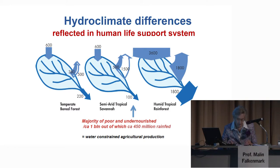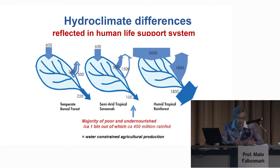The right-hand humid tropical basin has the same evaporative demand as the arid zone, but several meters of rainfall leaves enough water to meet both the giant evaporation of 1,500 millimeters and an enormous runoff, as exemplified by the Amazon and the Congo rivers. The mid, arid river basin represents the situation where today the majority of the poor and undernourished live — altogether some 1 billion people depending on severely water-constrained agricultural production.